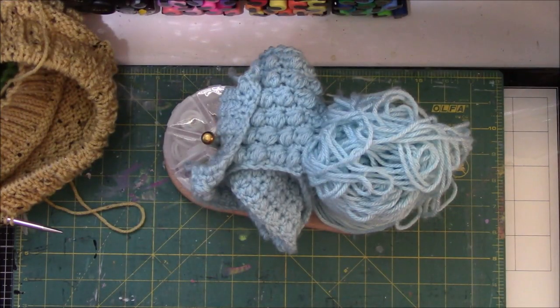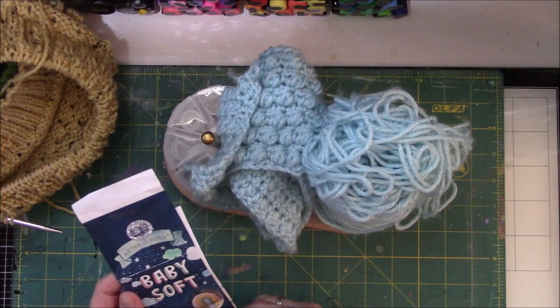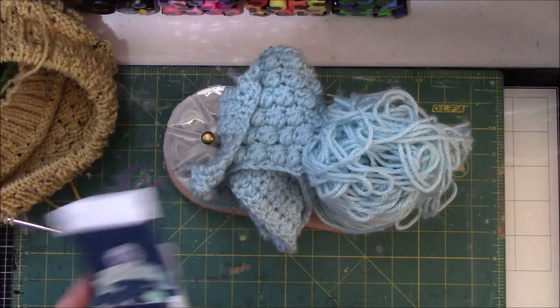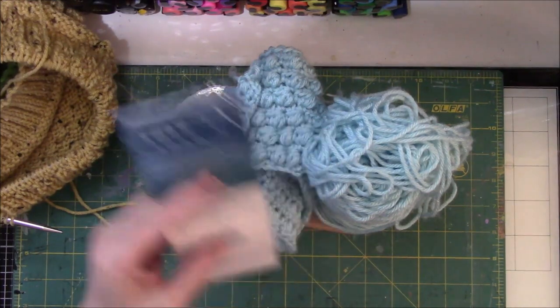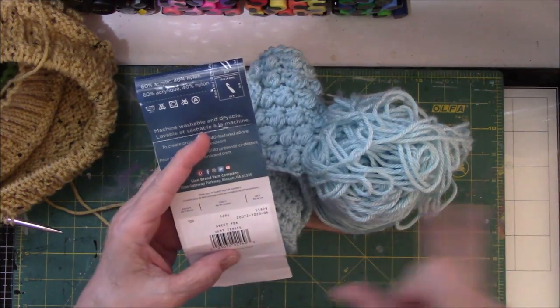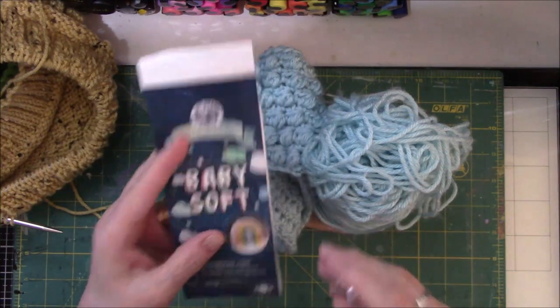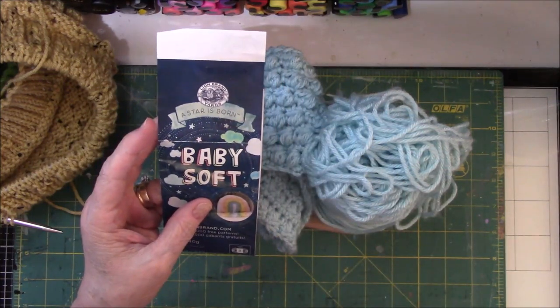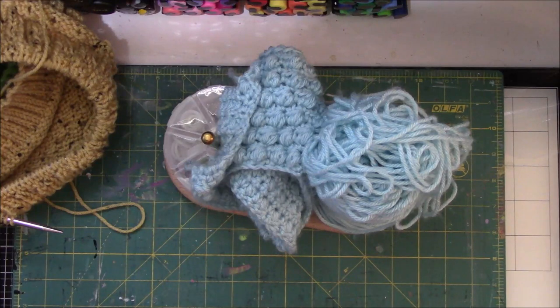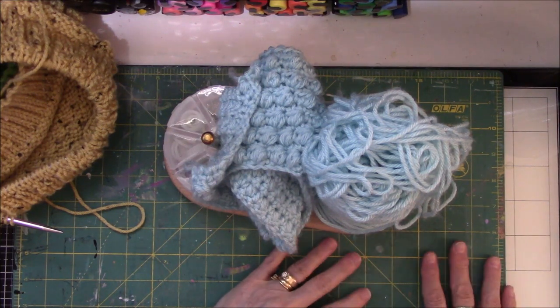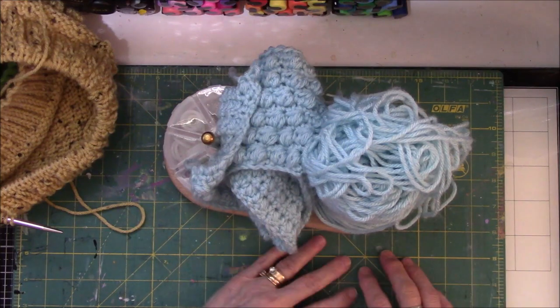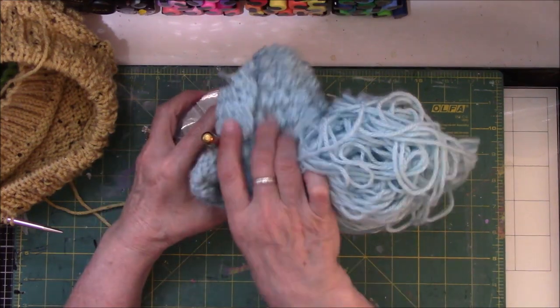So this is it. And this is Baby Soft from Joann's. It's called Baby Soft. It's Lion Brand. This is not the color that I bought. This is a green one that I finished another baby afghan with. But it's the same brand. So there's that. It's Baby Soft by Lion Brand. And I got it when Joann's was having a honking sale on 30% off of yarn. And I went through and I bought some yarn.